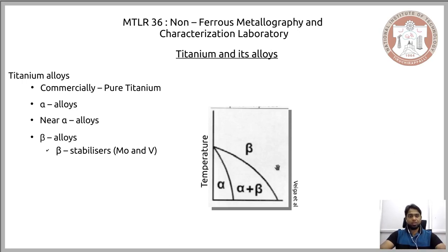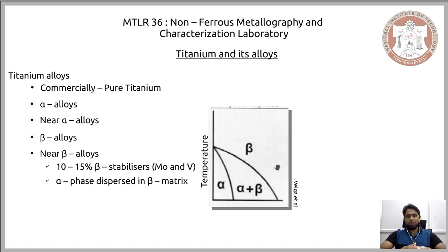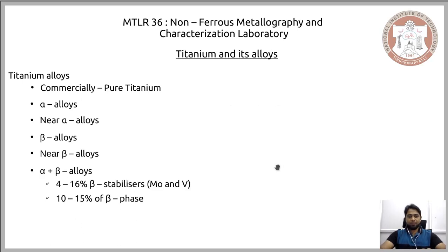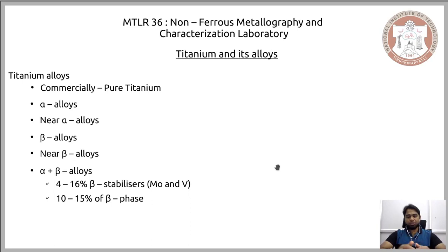Similar to alpha and near alpha alloys, we also have near beta alloys. What characterizes near beta alloys is that we have dispersed alpha phase in a beta matrix. In near alpha alloys, there can be a maximum of 10 percent beta phase in the alpha matrix; in near beta alloys, there is some percentage of alpha phase in the beta matrix. This set of alloys has a range of 10 to 15 percent beta stabilizers as alloying elements.